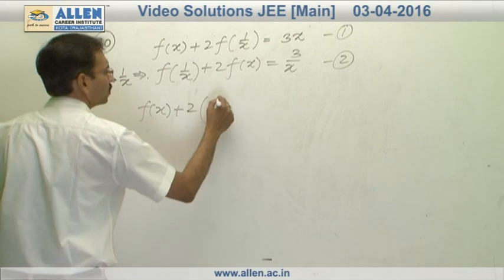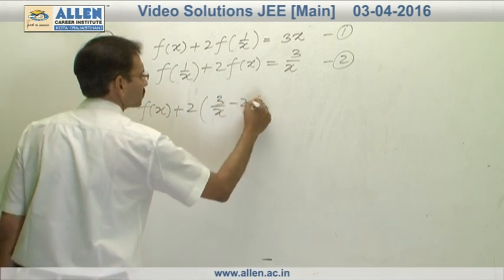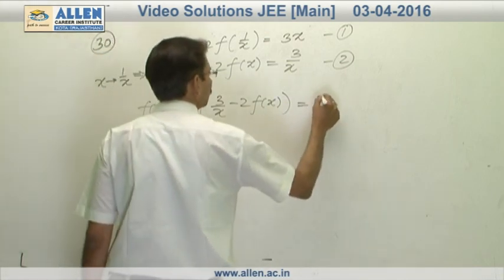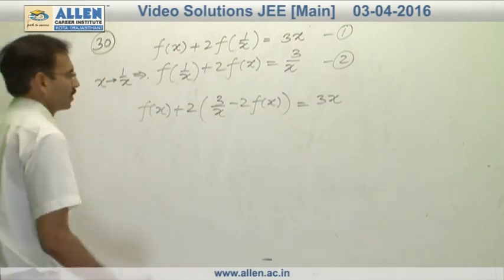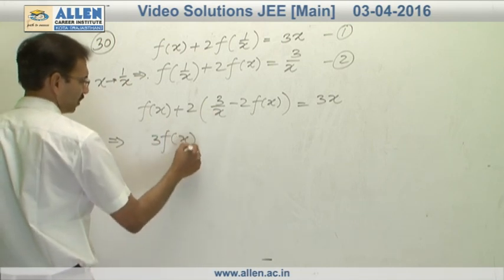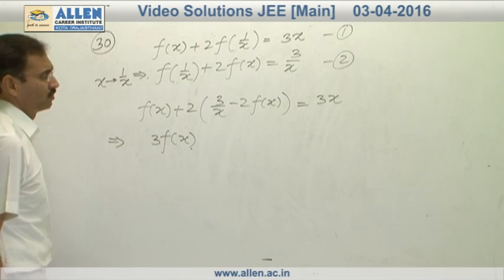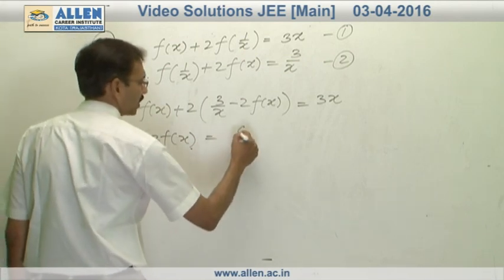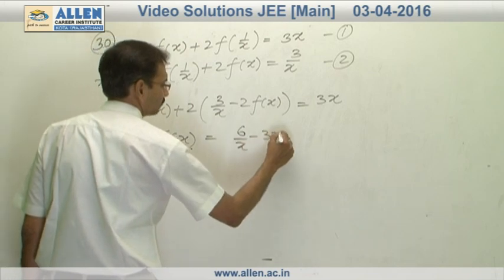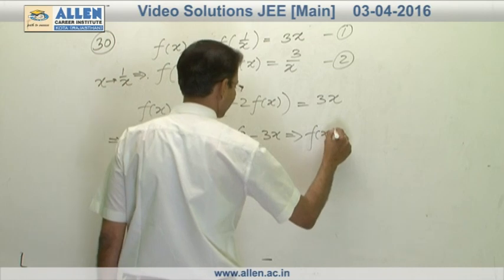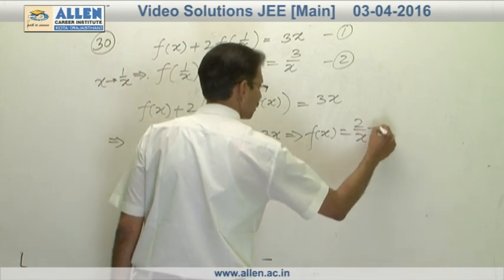f of x plus 2 times 3 by x minus 2 f of x is equal to 3x. f of x minus 4 f of x is negative 3 f of x. I consider it on right hand side. Now it is equal to 6 by x minus 3x. Cancel 3 and obtain f of x. It is 2 by x minus x.